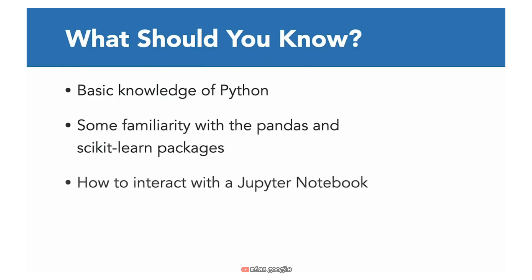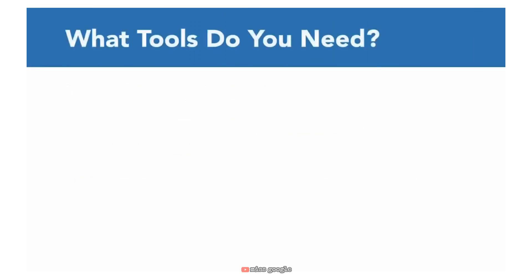Finally, I do assume that you know how to use the Jupyter Notebook interactive Python environment — specifically, that you know how to create a code cell, as well as how to edit and run code within the code cell. Before working through the exercises in the course, I want to make sure that you have the tools you need to be successful. The first thing you want to make sure to do is install or verify that you have the latest version of Python 3. I will be working in Python 3.8, so if you have the latest version of Python 3 you should be able to run my code. However, if you're still on Python 2, you may run into some difficulty.